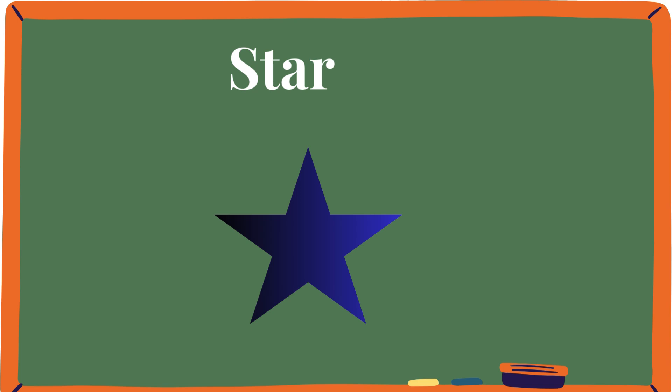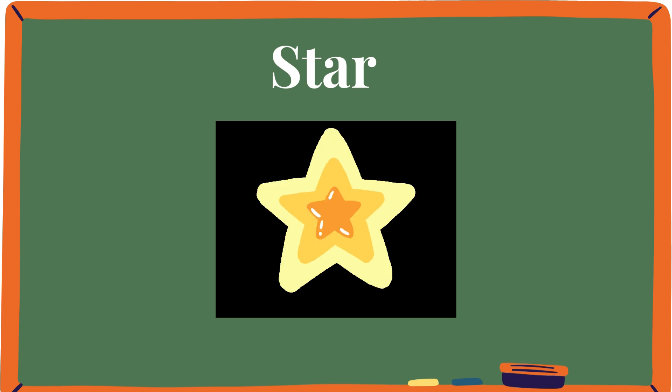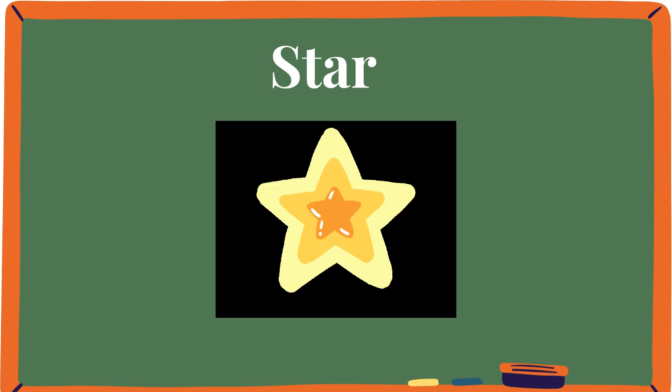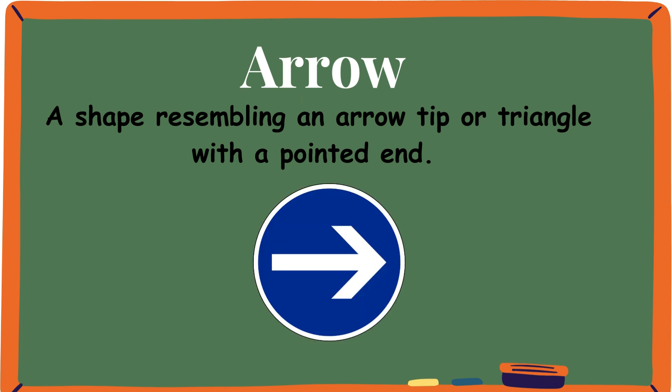Star. Look at this beautiful twinkling star. Arrow — a shape resembling an arrow tip or triangle with a pointed end. This arrow is a train arrow showing us to go the right way.